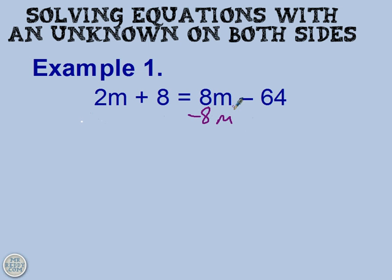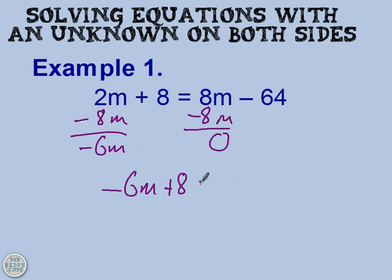If I show you what happens with this example, taking away 8m from both sides at first, then we'll see what happens. So take away 8m from both sides, 2m take away 8m is negative 6m. We run into a problem. We have negative 6m and then we have a new equation, negative 6m plus 8 equals negative 64.